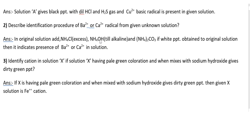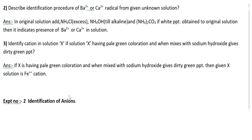Add NH₄Cl, NH₄OH, and (NH₄)₂CO₃ to the original solution. If white precipitate is obtained, then Ba²⁺ or Ca²⁺ is present in the solution. To identify the cation in solution S: if solution S has pale green coloration and when mixed with sodium hydroxide gives dirty green precipitate, then solution S contains Fe²⁺ cation.